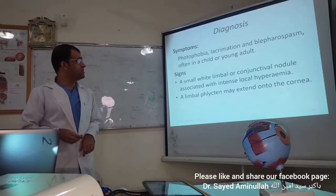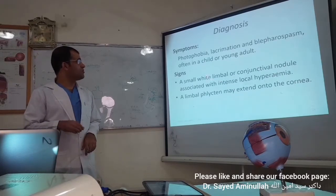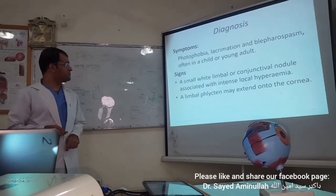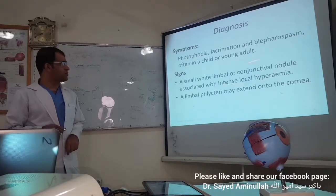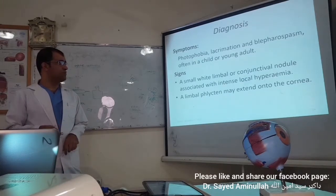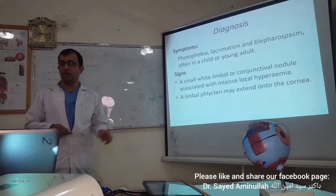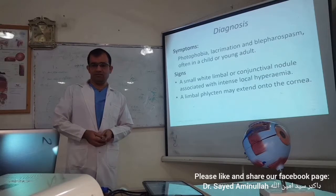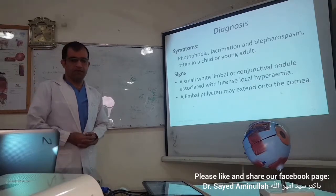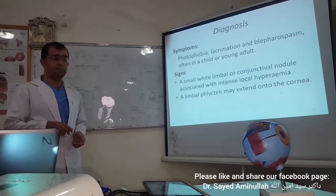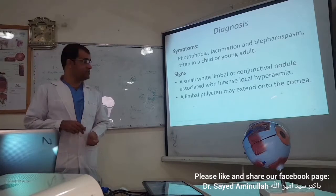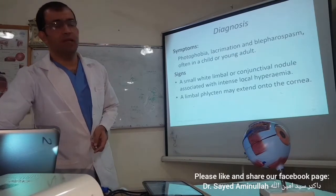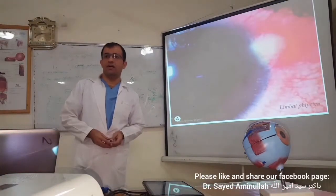The symptoms of phlyctenulosis include photophobia and blepharospasm. They are most often seen in children or young adults. The sign is a small white nodule — either limbal or conjunctival — associated with local hyperemia of the conjunctiva. The hyperemia is present. If it is conjunctival, it is less severe than if it is limbal. If it is in the limbus, it can extend to the cornea, causing corneal complications. Limbal phlyctenulosis is more severe than conjunctival phlyctenulosis.